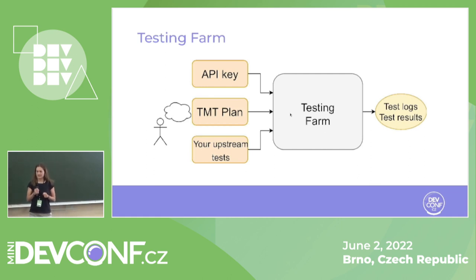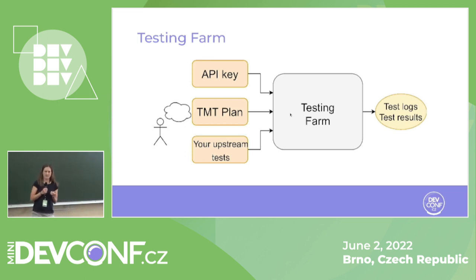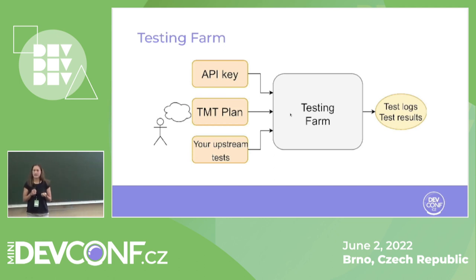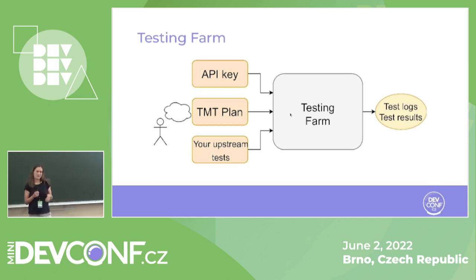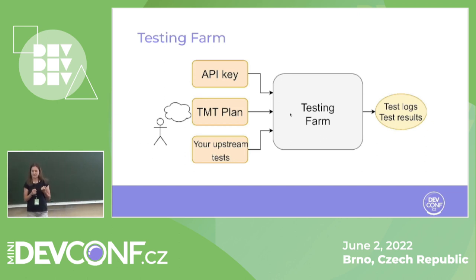If you want to test on the Testing Farm, you need an API key. Testing Farm communicates via HTTP API. The API key can be obtained from the Testing Farm team. Then you need to have a Test Management Tool plan — that is the plan that describes your test and initializes your environment. And then you of course need the upstream test. As an output from the Testing Farm, you get test logs and test results.